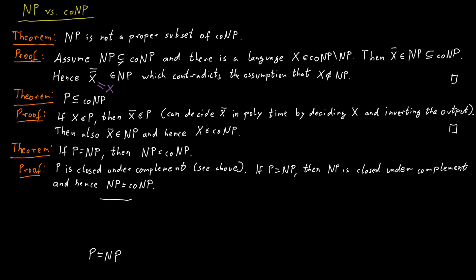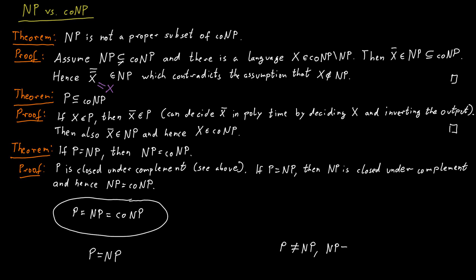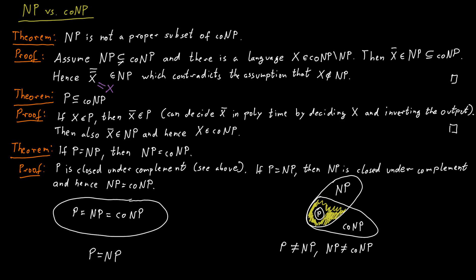This tells us that we should live in one of these two worlds. Either P is equal to NP, in which case it's also equal to co-NP — a rather boring world where all these problems are in the same class. Or there's a different world where NP is not equal to co-NP, and P is contained in both of them. Then we have the intersection of NP and co-NP. It's not known whether P equals NP intersect co-NP, or whether there is a problem in NP intersect co-NP that is not in NP. So this yellow area here could be empty or not — we are not quite sure.